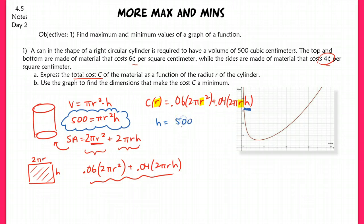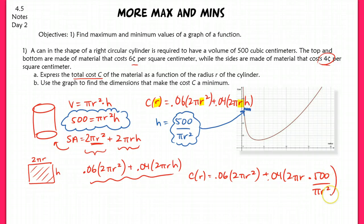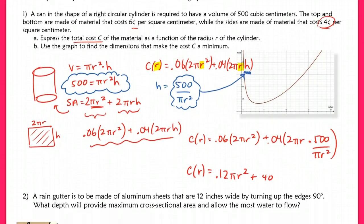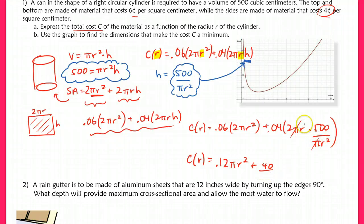If I solve for h here, now I can plug in this value for h. So when I do that, my function becomes 0.06(2πr²) + 0.04(2πr)(500/πr²). Now I'm going to work on simplifying this. So I have cost in terms of the radius equals 0.12πr² plus—this is going to be 1000 times 0.04, so 40, since the π's will cancel and one of these r's will cancel—40/r. So this is your function with respect to the radius of the cylinder.